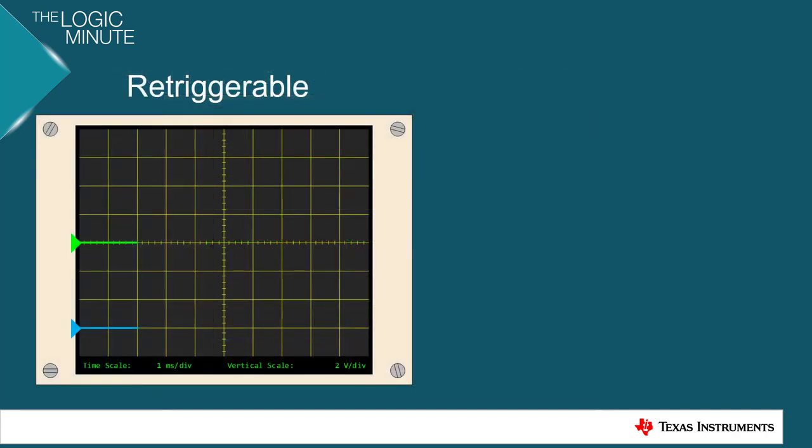Now into some device specifics. On the left here, we have a retriggerable waveform. Where we see the first input trigger, our monostable will go high, and we would see an output pulse width of TW. However, because there is a second trigger, we would see one full pulse width of TW after the final trigger.